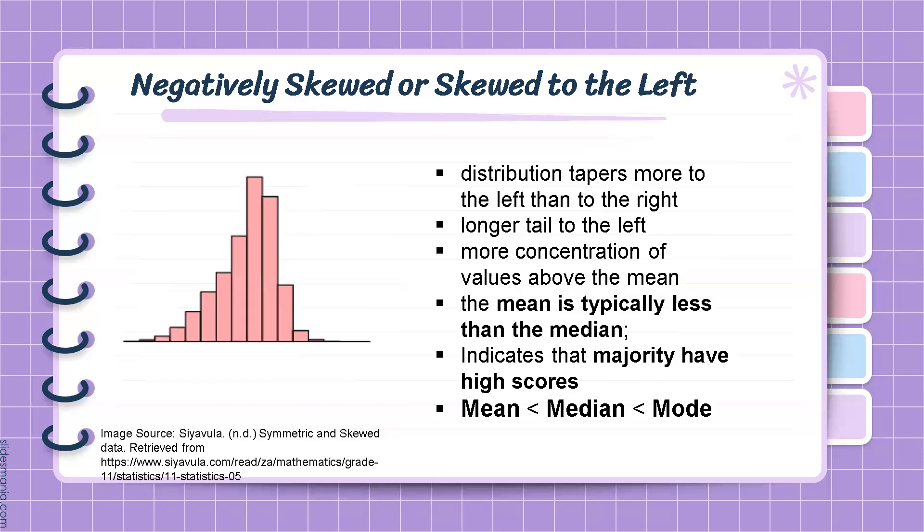On the other hand, negatively skewed distribution, or commonly known as skewed to the left, tapers more to the left than to the right. It has a longer tail to the left and more concentration of values are found above the mean. This indicates that majority have high scores when considering a class distribution. The mean is typically less than the median and the mode.